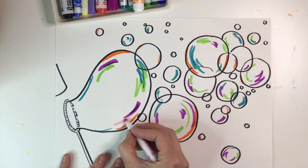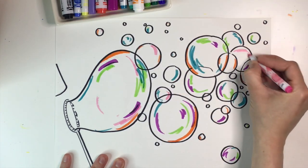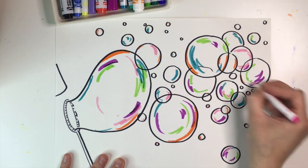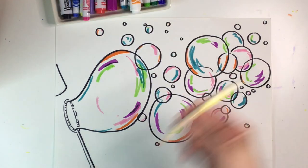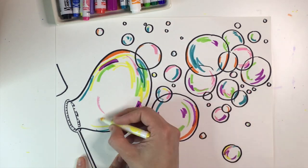Because remember bubbles are typically see-through or transparent. So if we're only keeping our color to the outer edges, it's going to look like we can see right through the center of the bubble.